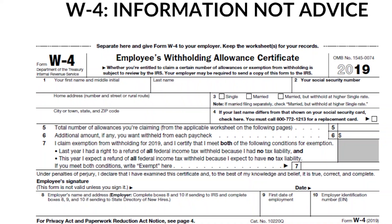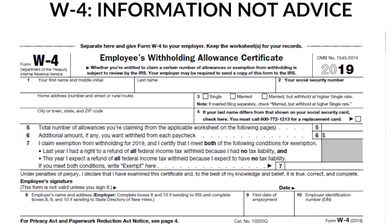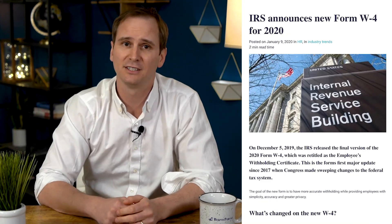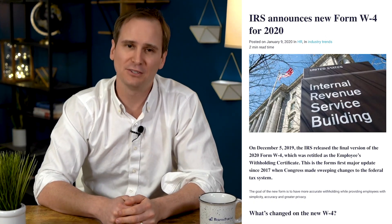How much do employers withhold from employee paychecks? This amount is based on the information they provide on their W-4, which should be filled out on the employee's first day and outlines the tax exemptions they're claiming. It's illegal to complete someone else's W-4 — you can explain the form but should not influence their responses. It's not your responsibility to verify the accuracy of employee information, and employees can change their W-4 at any time. The IRS released a new W-4 for 2020, required for all employees starting work after January 1st. Employees who filled out the W-4 prior to 2020 are not required to submit a new document solely due to the new design.